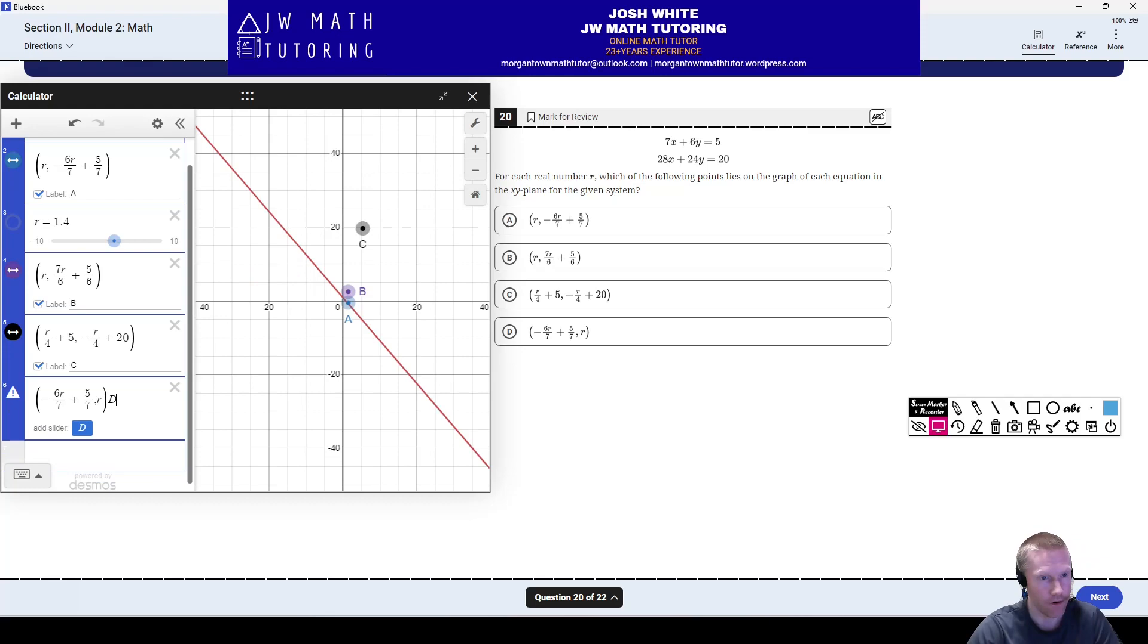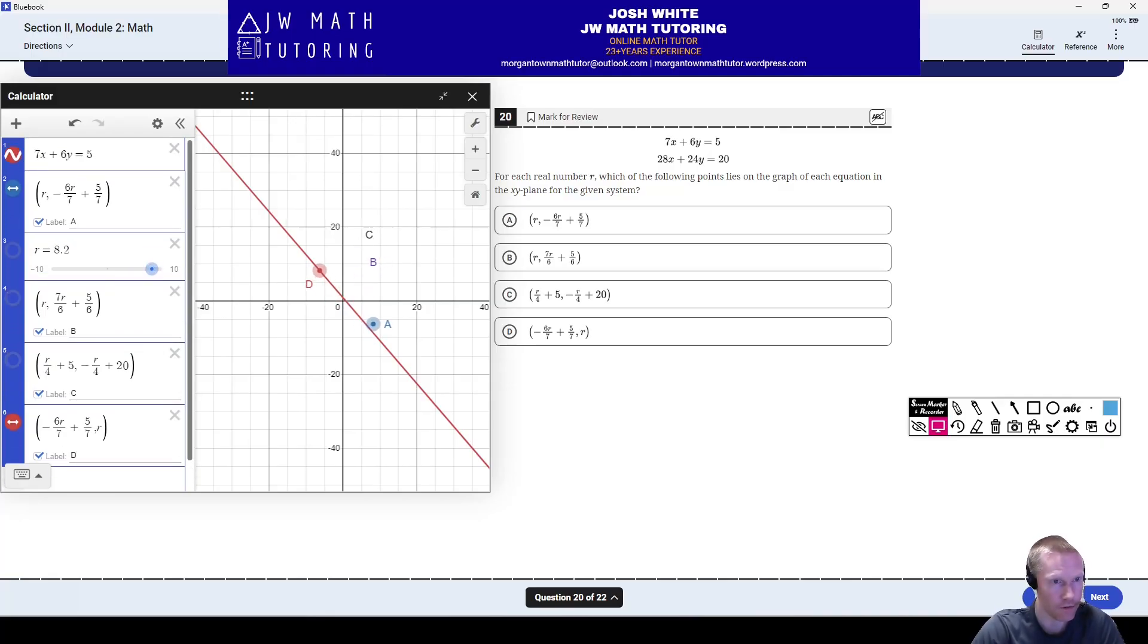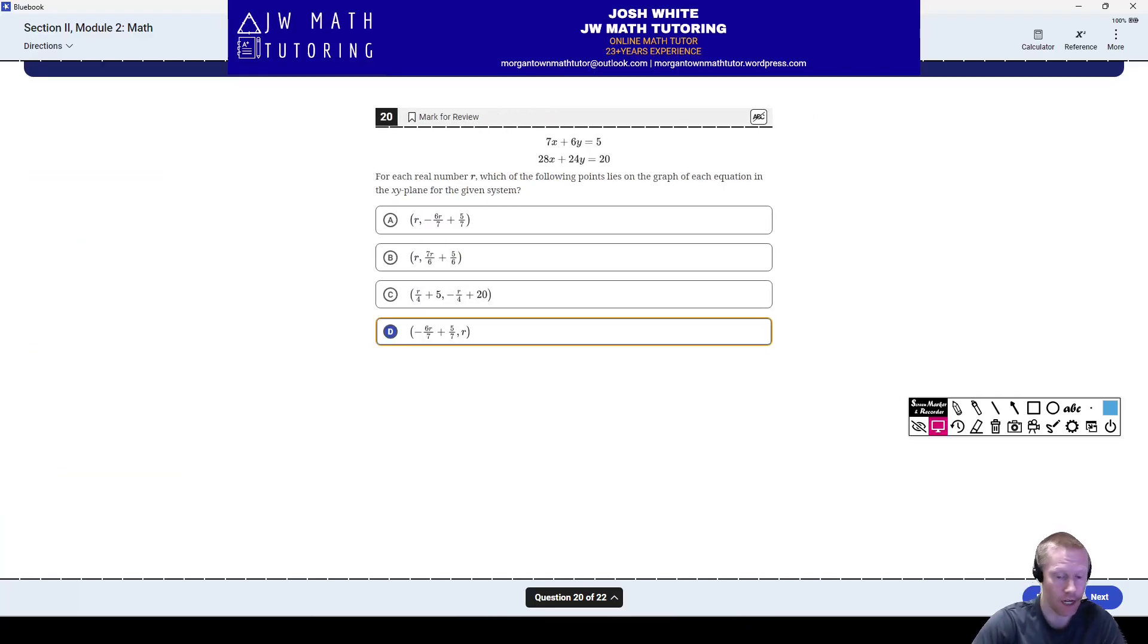All right. Well, what about D now? No, I meant this should be, sorry, down here. There we go. Okay. So first, let's get rid of this. Let's get rid of this. Let's get rid of this. Notice, D stays on the line the entire time, no matter where I move R. So D is the correct answer. I would only recommend solving those problems using this method in Desmos. I wouldn't even waste time on the other methods personally.